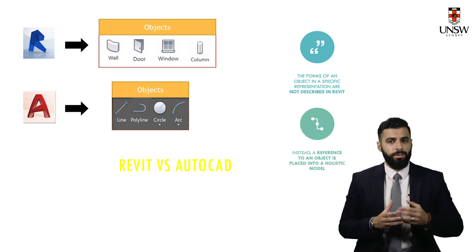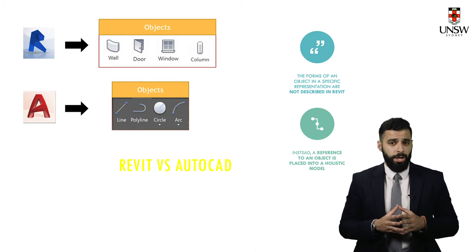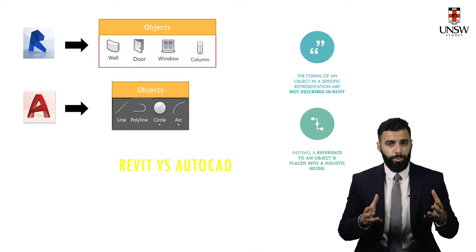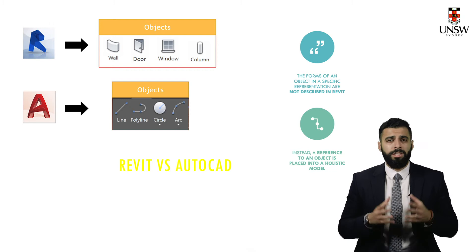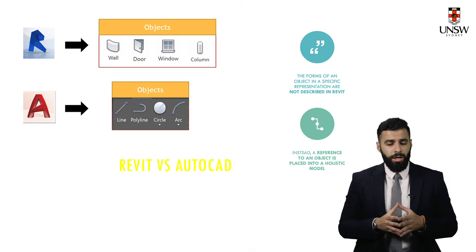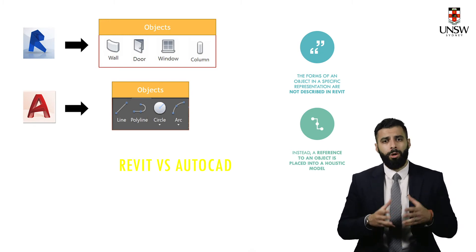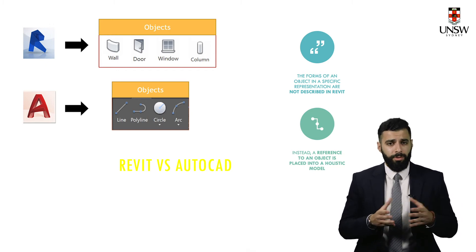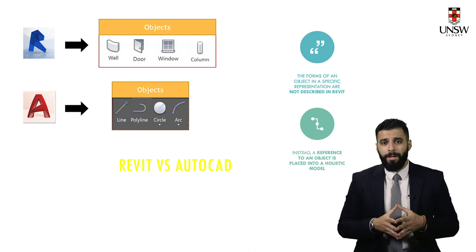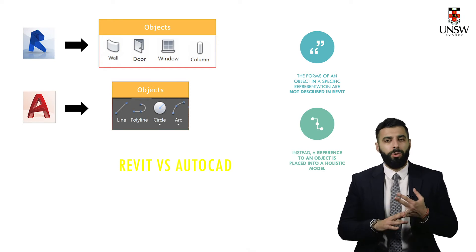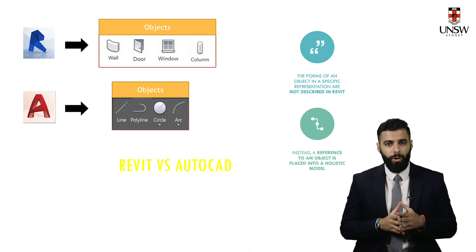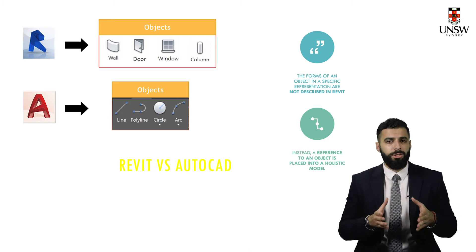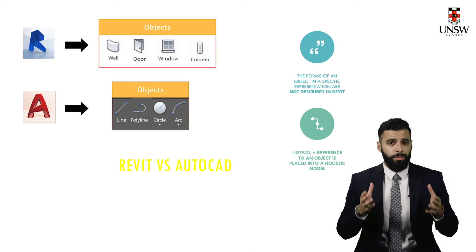You then link that inserted object with other objects representing other elements in the building. To form the overall structure you have to have a perfect link between all these objects in your model. In Revit the object is part of a holistic model, whereas in AutoCAD you construct individual objects — walls and floors — from simple lines or polylines. The objects in Revit are data-rich, containing information embedded within each object: geometry, materials, cost, and supplier information. This is not the case in AutoCAD where lines and polylines do not contain any information about materials or costs.